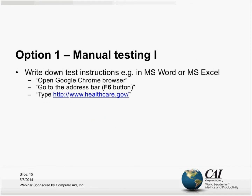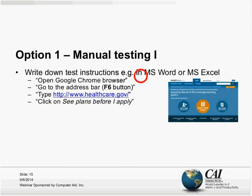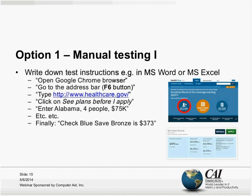Looking at the options, we'll start with manual testing because this is what a lot of people do — it's easy to get into. What does manual testing mean here? We need to write down the test instructions, for example in Word or Excel. The instructions look like: open Google Chrome browser; go to the address bar or press F6; type healthcare.gov; go to the site; click 'See plans before I apply'; enter Alabama, four people, $75K, and all the different options. Then finally check what we need to check — for example, that the Blue Save Bronze plan is $373.